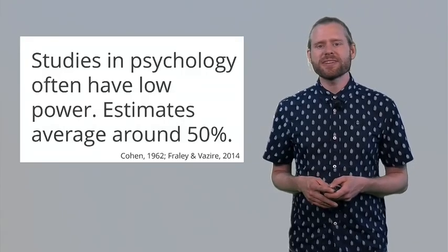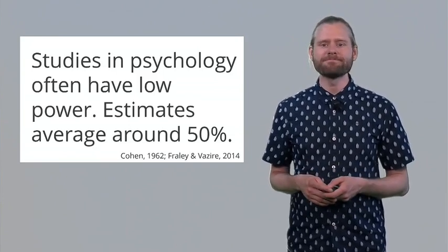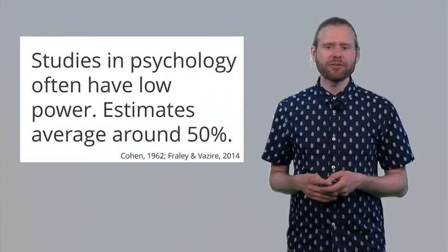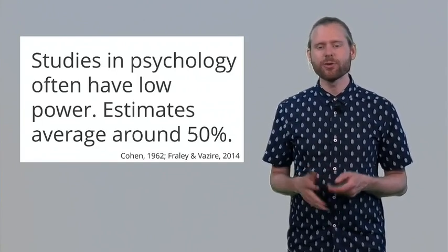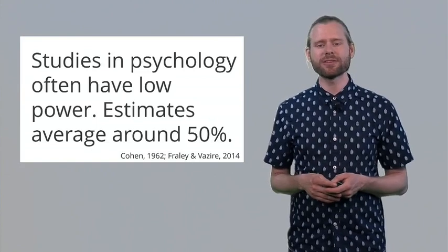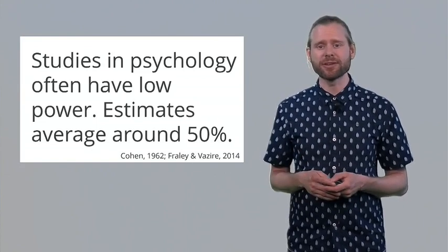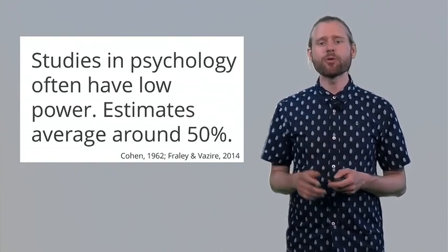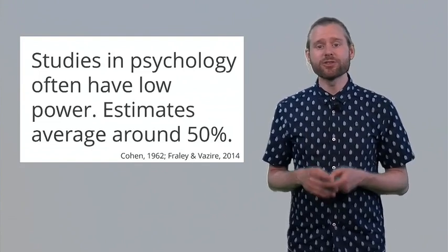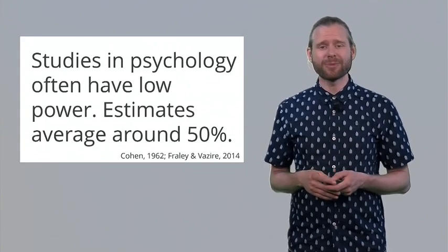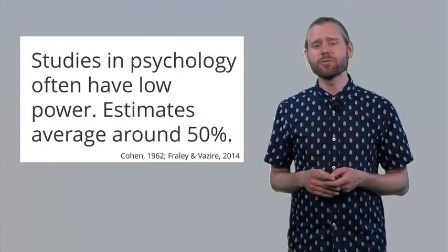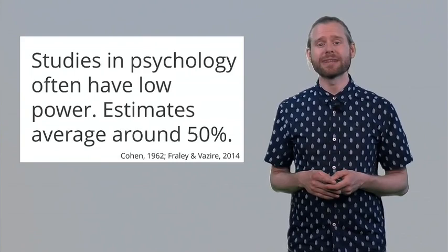We see that studies in psychology often have very low statistical power. Estimates average around 50%, which means that even if you have a true hypothesis, you only have a 50% probability of actually observing a statistically significant finding. I think that if people realized this, they would seriously reconsider doing the study, because they only have a 50% probability of finding an effect when it is there. That doesn't seem to be worth all the effort to collect this data.